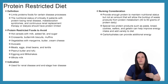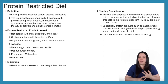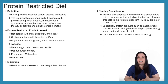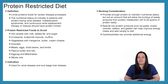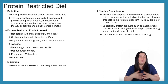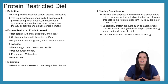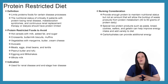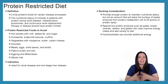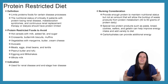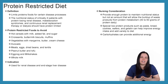Special low protein products such as pasta, bread, cookies, wafers, and gelatin can help improve energy intake and add variety to these patients' diets. Carbohydrates can provide additional energy when severely restricting protein.